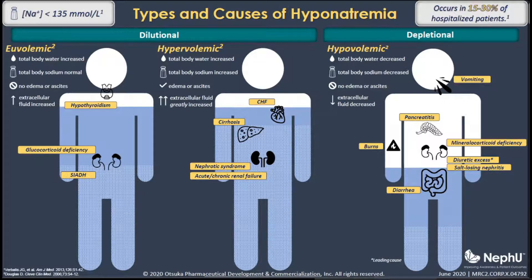Lastly, we can have euvolemic hyponatremia, where we see an increase in total body water, which is typically AVP-mediated water retention, with our total body sodium remaining unchanged. We typically see an increase in extracellular fluid, but we do not tend to see edema or ascites on physical exam. When we look at the composition of the plasma, we see a low BUN and a low serum uric acid. Euvolemic hyponatremia is most commonly caused by the syndrome of inappropriate anti-diuretic hormone, or SIADH, which I will now kick over to Dr. Brad Lamott to go over SIADH diagnostic criteria in more depth.